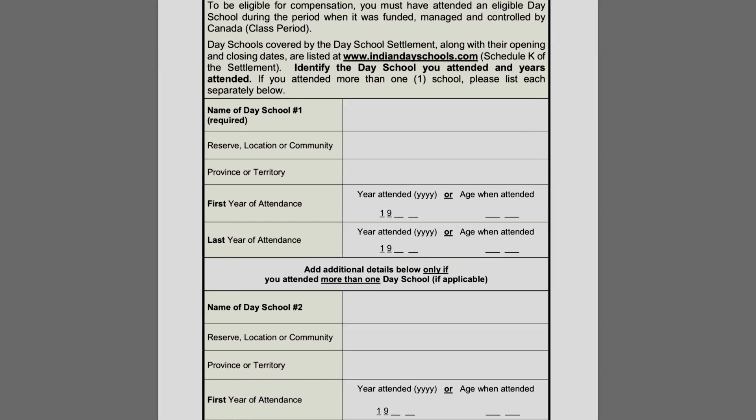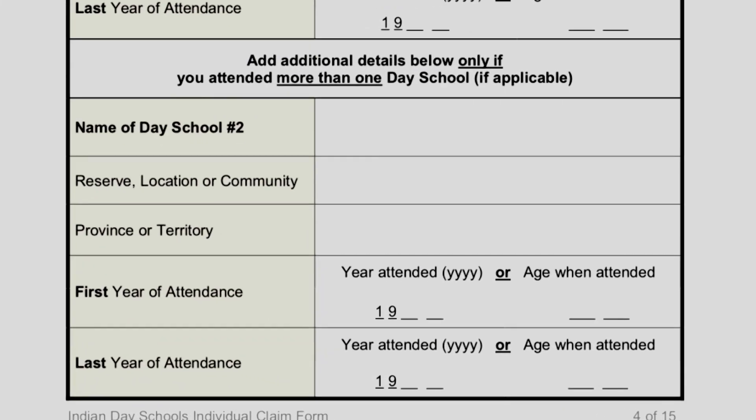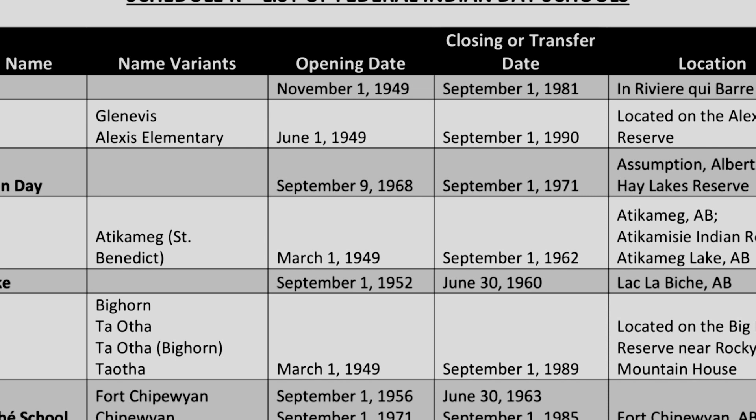In part two, they will ask you for the name of the school, the reserve, location or community in which the school was located, and the province or territory. They will also ask you the first year you attended or the age you were, and the last year of attendance or the age you were when you completed day school. If you can't recall the year or age you started, you can work backwards from when you completed day school. If you attended more than one day school, add that to the list as well. To find the name of the school, you'll need to go to Schedule K, which lists the dates when the Government of Canada was operating, managing, or controlling that school. Some schools continued operating after those dates but had reverted to the local school board, so the dates covered are very specific.